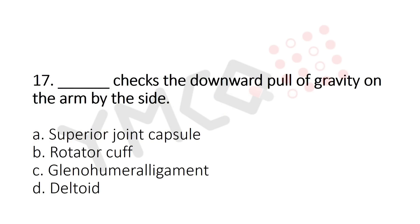Question 17: Which structure checks the downward pull of gravity on the arm by the side? Option A: superior joint capsule; option B: rotator cuff; option C: glenohumeral ligament; option D: deltoid. The answer is option B: rotator cuff.